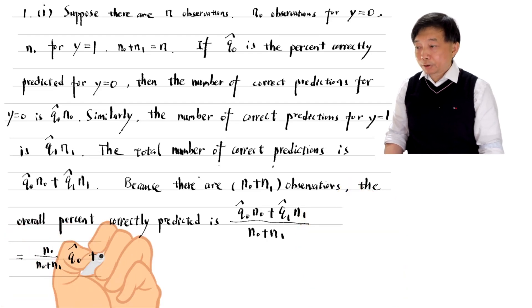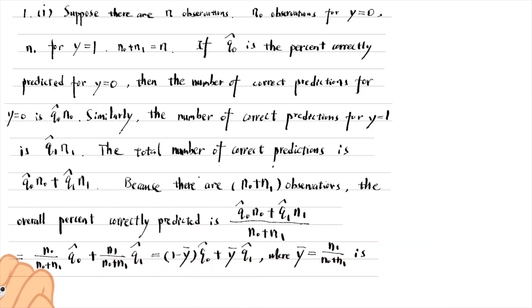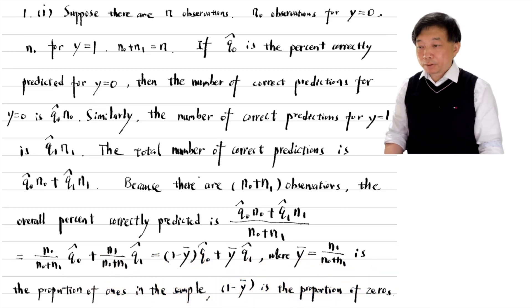So the overall percent correctly predicted is the total number of correct predictions divided by the total number of observations. Rearranging the expression, we obtain the answer. The overall percent correctly predicted is a weighted average of q₀ hat and q₁ hat, where the weights are the fractions of zeros and ones in the sample.